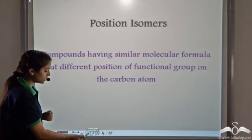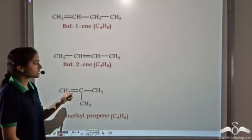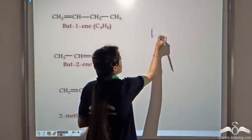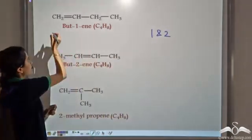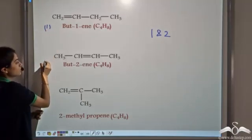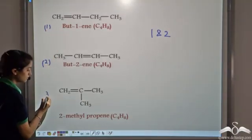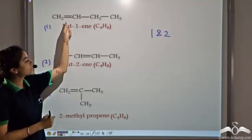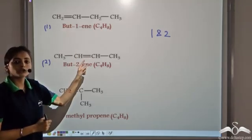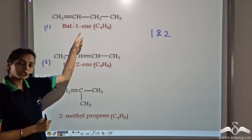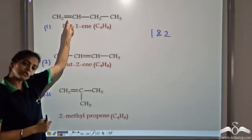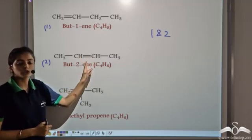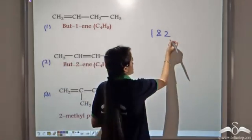Looking at the three isomer structures obtained, let's label them one, two, and three. Comparing structures one and two, we observe a difference in the position of the double bond: in structure one the double bond is at position one, and in structure two the double bond is at position two. Therefore, structures one and two are position isomers.